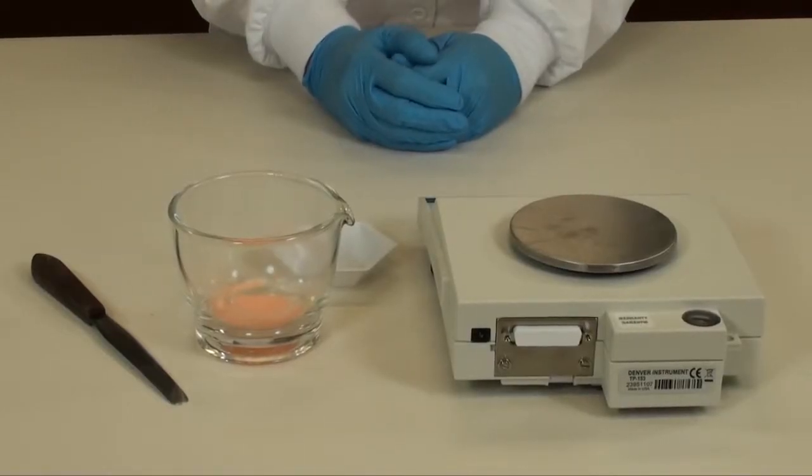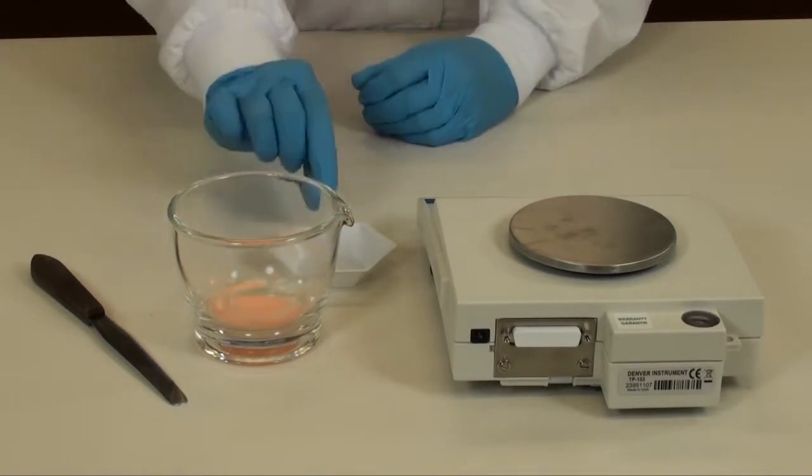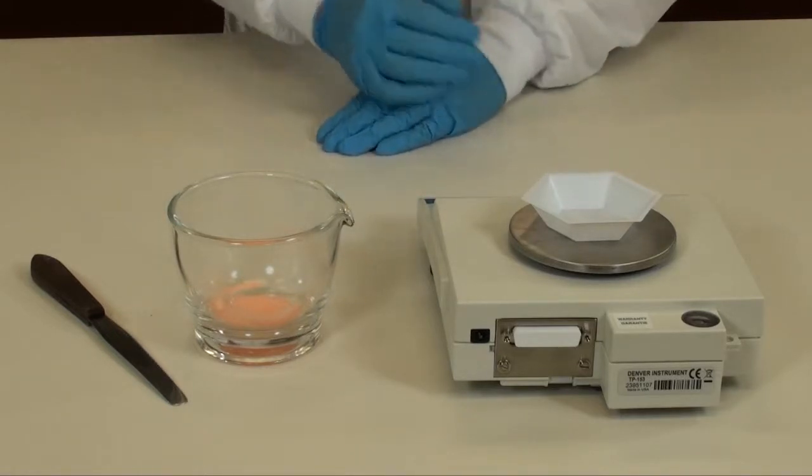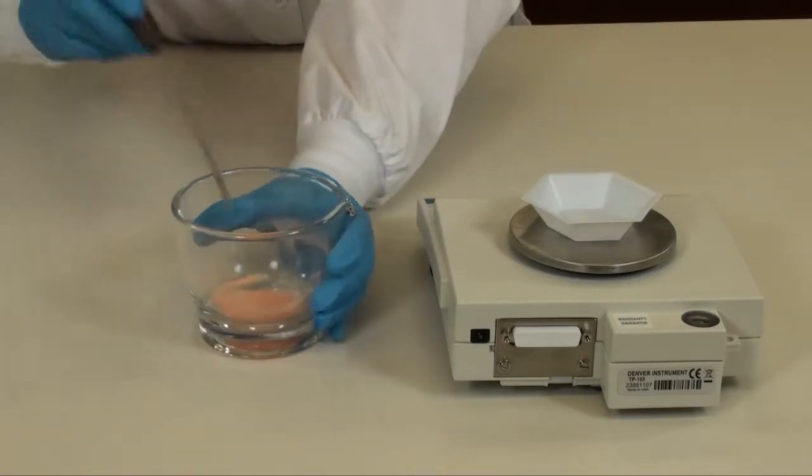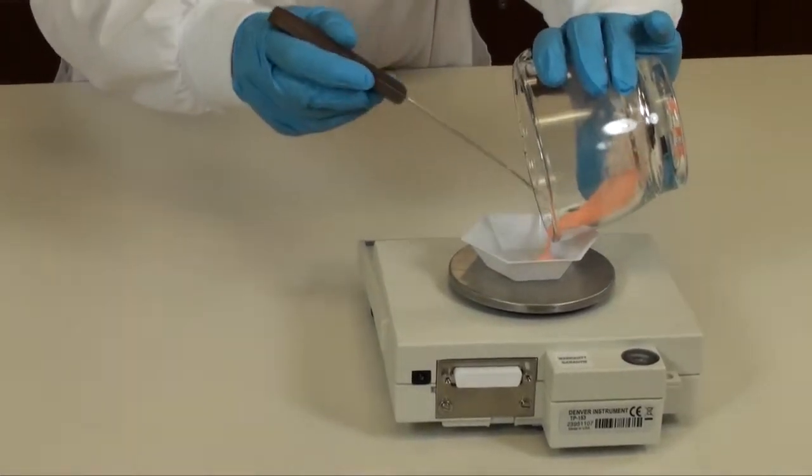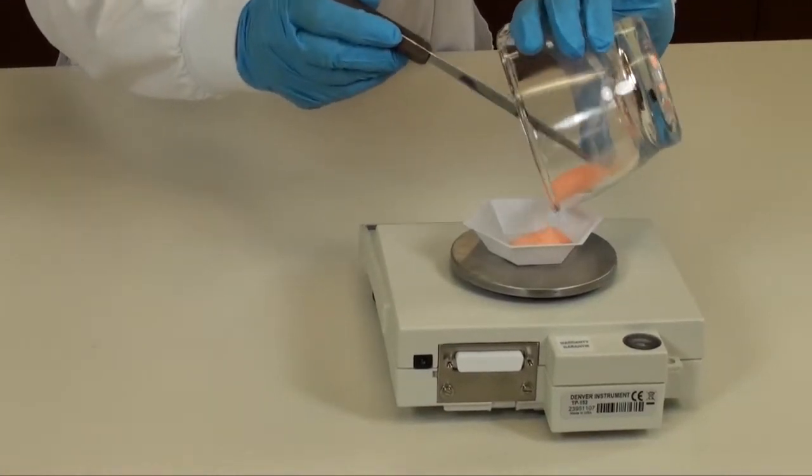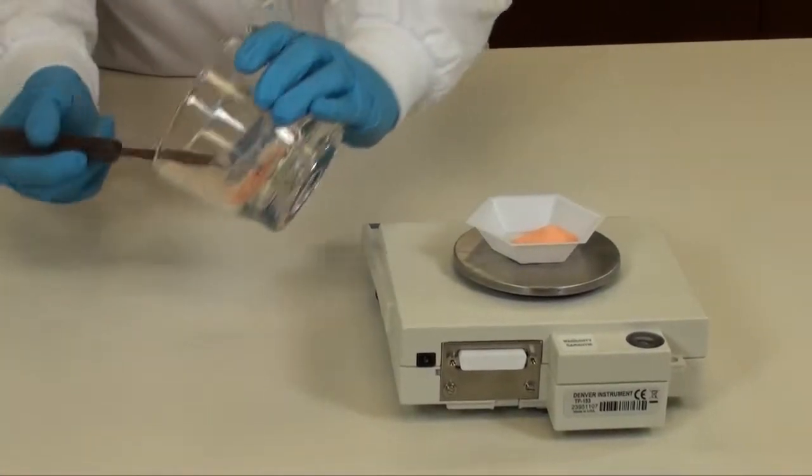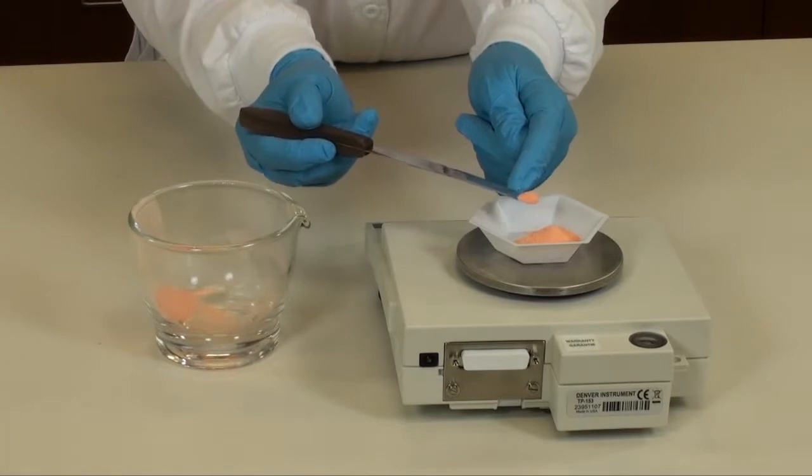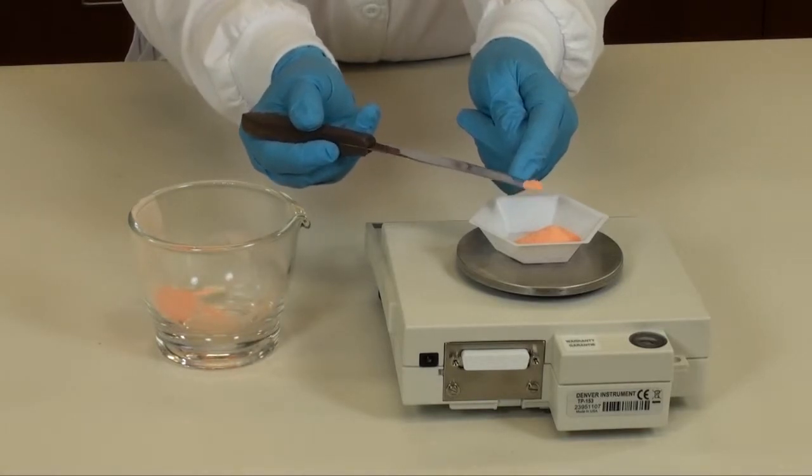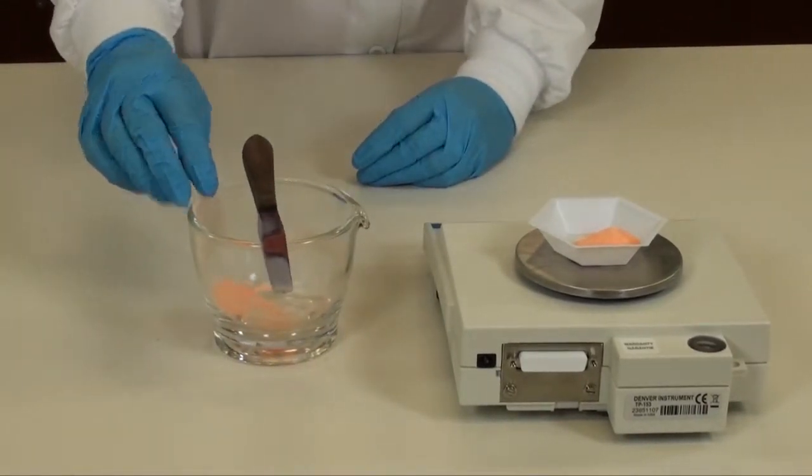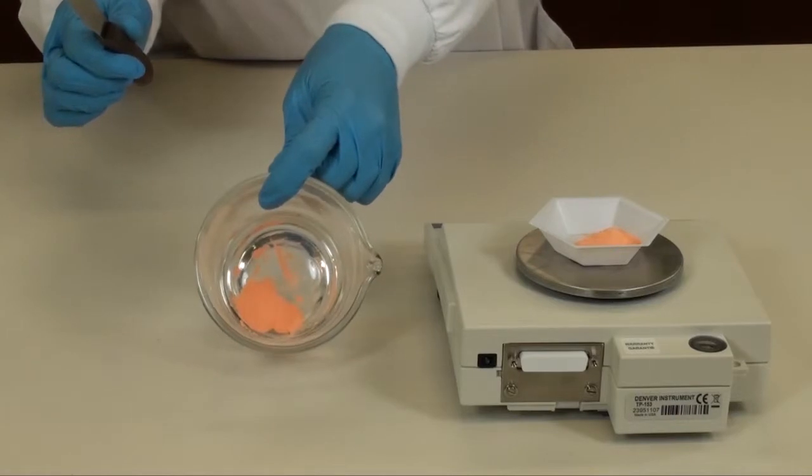You're now ready to weigh your crushed tablet allopurinol powder. Remember, take a medium weigh boat and tare your scale to zero and put the required amount of allopurinol powder into the weigh boat. When you get close to your target weight, gently tap some powder until you reach your target weight. Remember to discard the excess powder in the mortar appropriately.